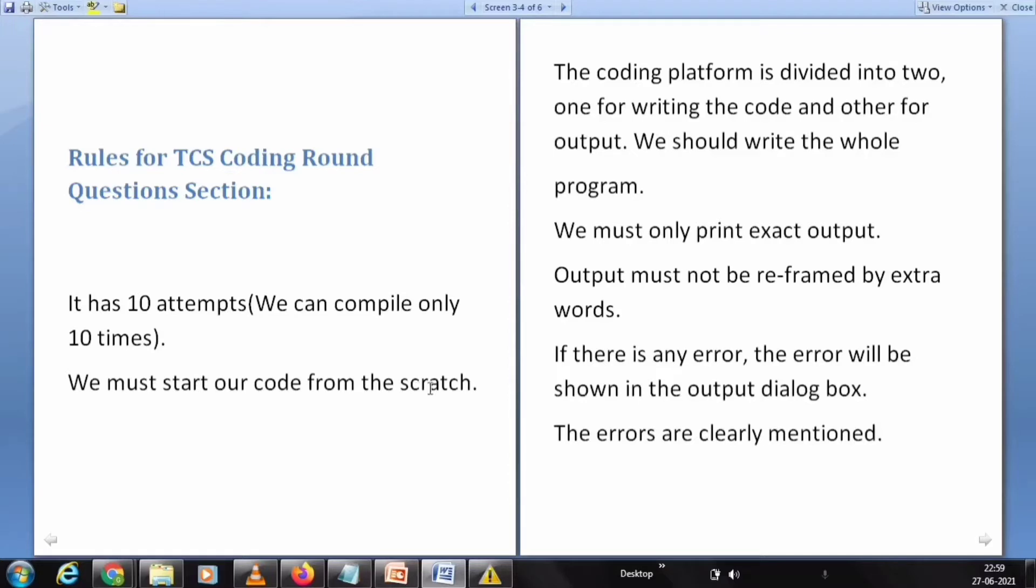We must start our code from scratch. The coding platform is divided into two: one for writing the code and another for output. We should write the whole program. We must only print exact output. The output must not be reframed by extra words.